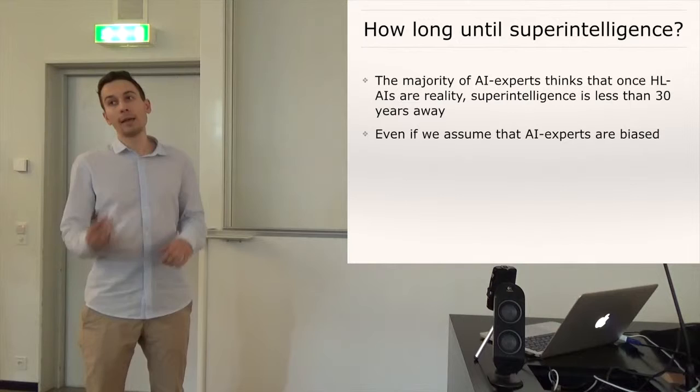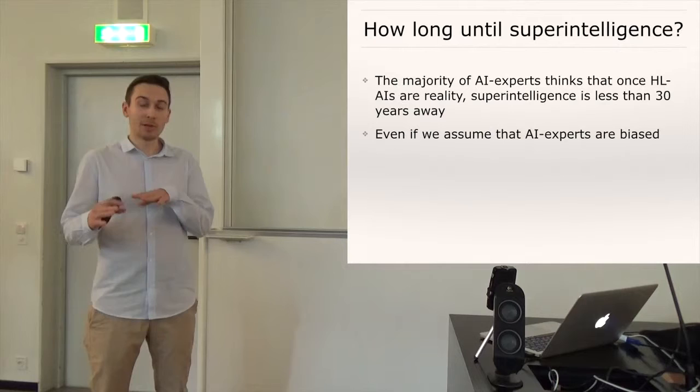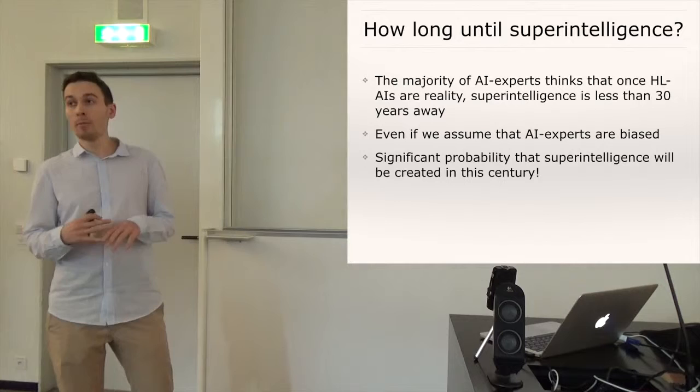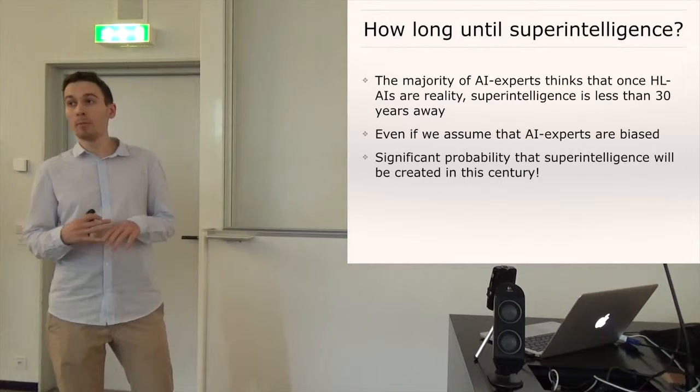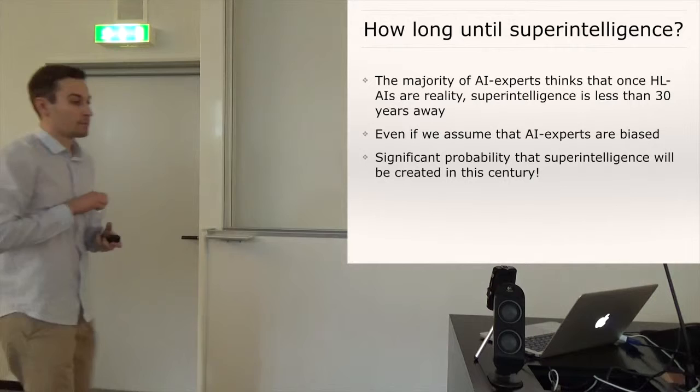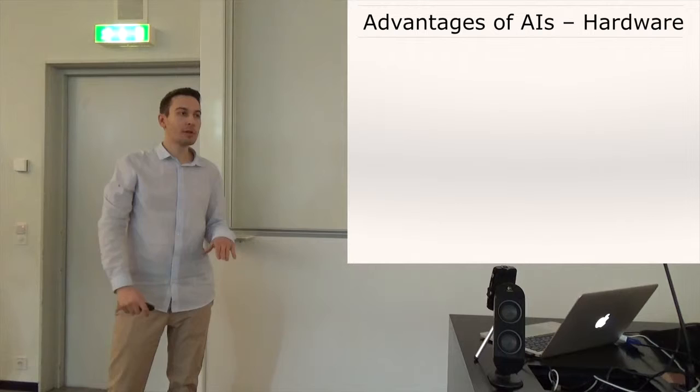And so then we could also ask ourselves, okay, how long does it then take to achieve superintelligence? And again in the same survey the majority of AI experts also believe that once human level AI is created superintelligence is probably less than 30 years away. So even if we assume that AI experts are biased just because of selection effects or because they just want to get more funding or whatever, and keep in mind that those arguments could also be applied for example to climate scientists, even if we then downgrade their estimates and I myself have wider confidence intervals, it still would seem severely overconfident to assume that there is a probability of less than 10% that superintelligence will be created in this century and that's basically all we need to assume.